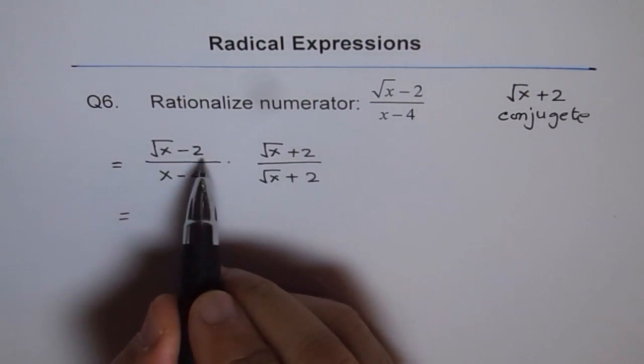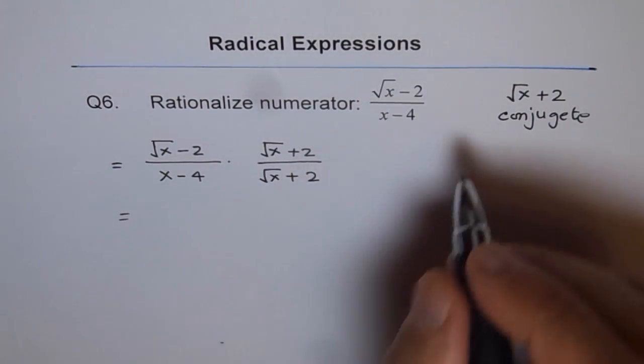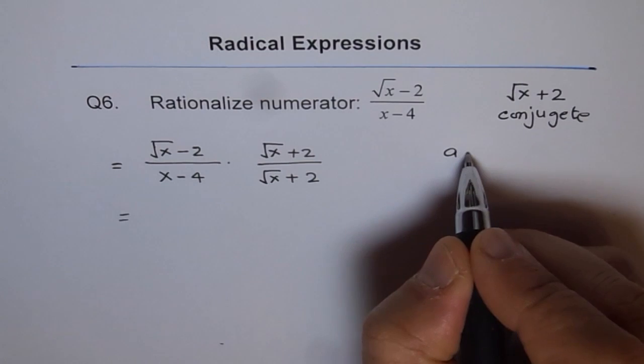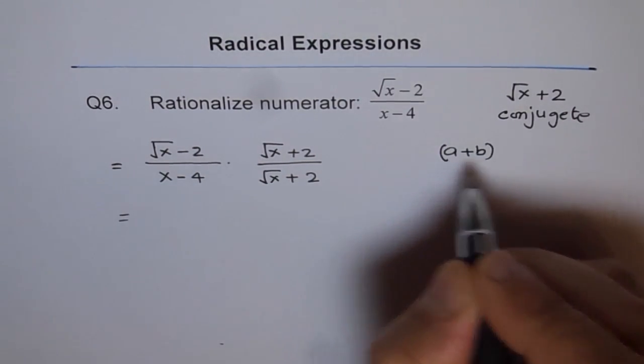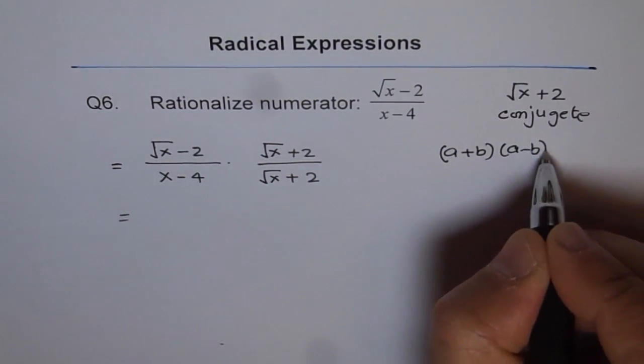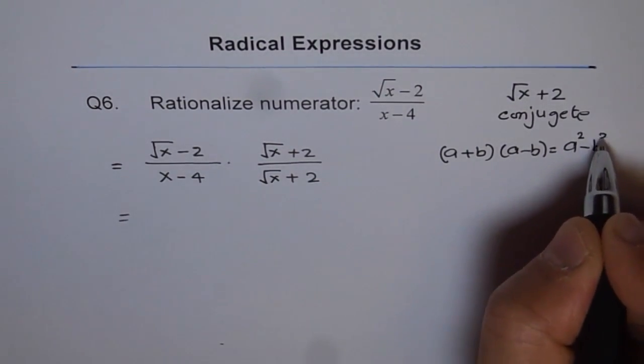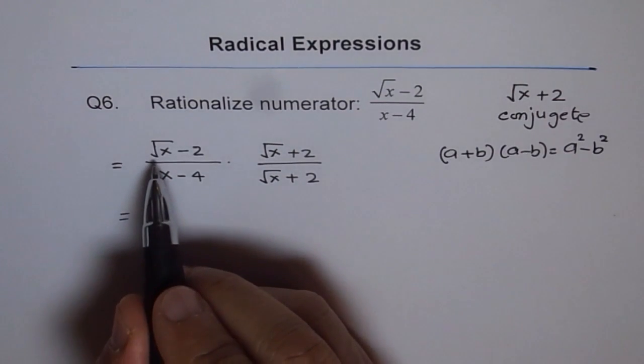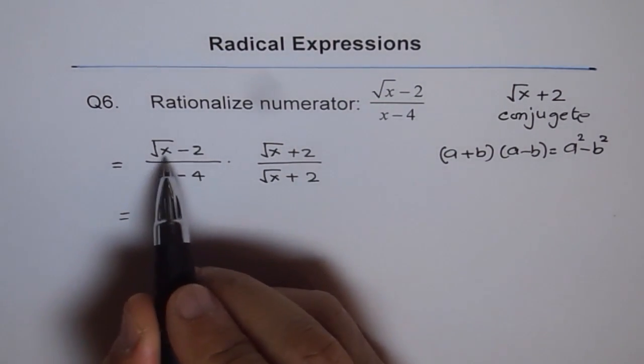Now once we do this, then it is like a minus b times a plus b, which you know is a square minus b square. a plus b times a minus b equals a square minus b square. Here a is square root x and b is 2.